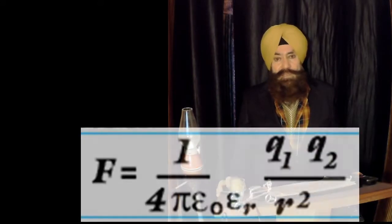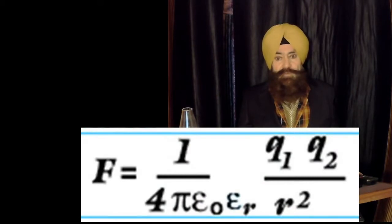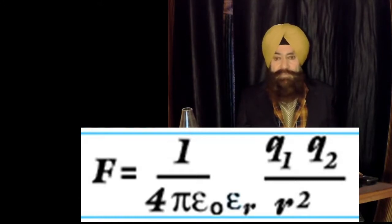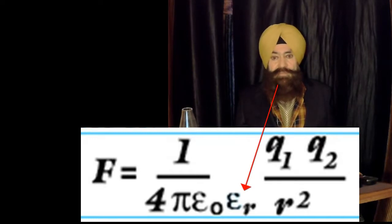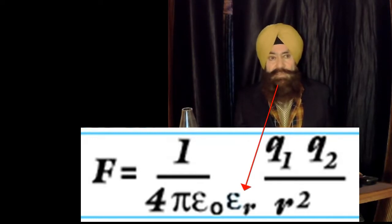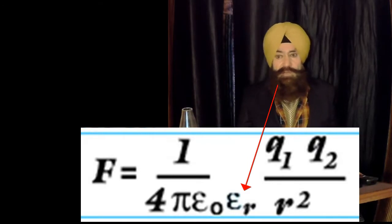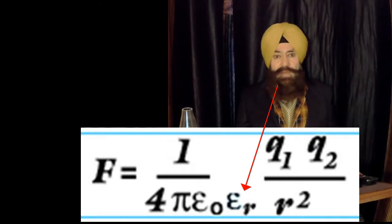in a medium of relative permittivity epsilon r, then the same formula becomes 1 over 4 pi epsilon naught epsilon r times q1 q2 by r square. In a medium, there comes epsilon r, which is called relative permittivity, and it is also called dielectric constant.